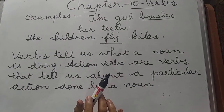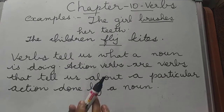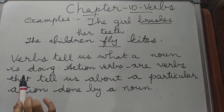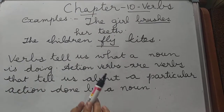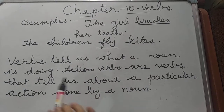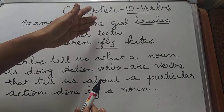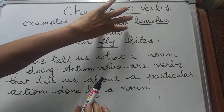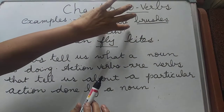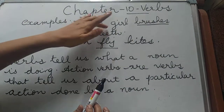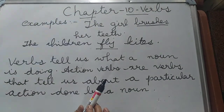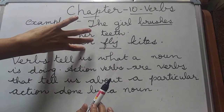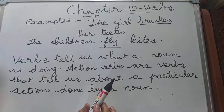Have you understood, children? Verbs tell us about what a noun is doing. What is this noun doing? The girl is the noun. What does this girl do? The girl brushes her teeth. What are these children doing? These children fly kites.